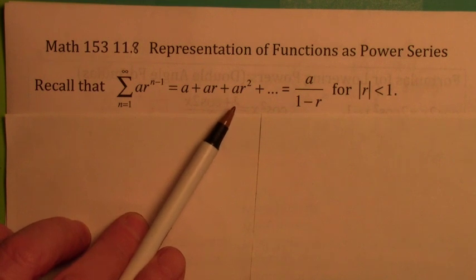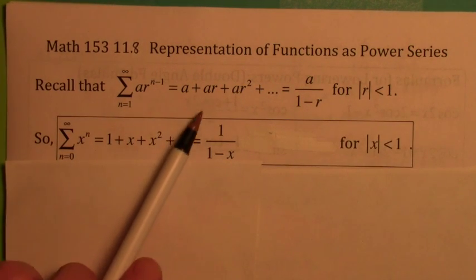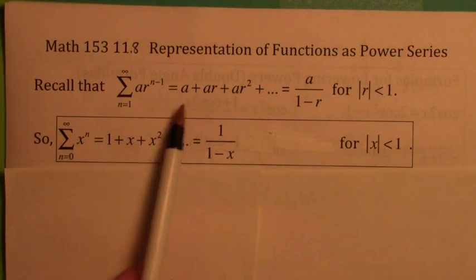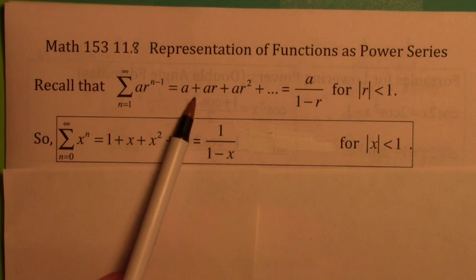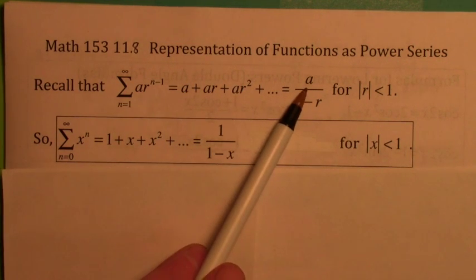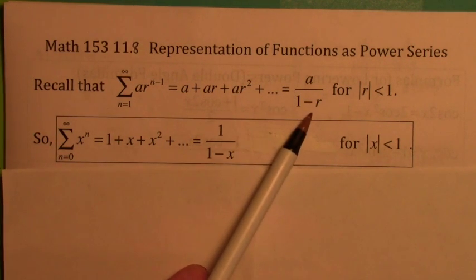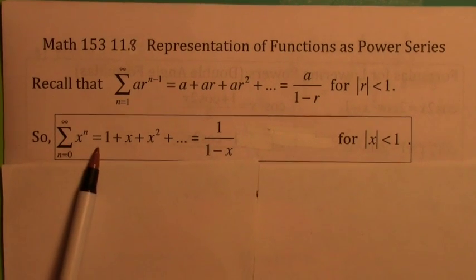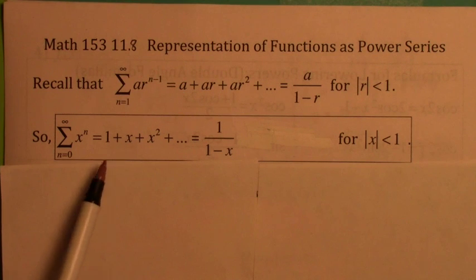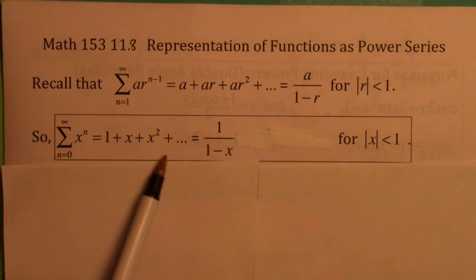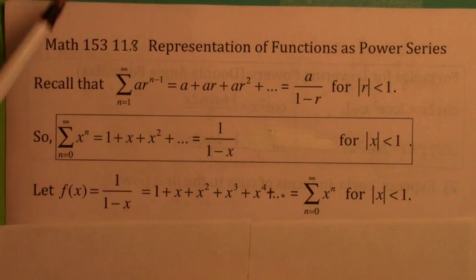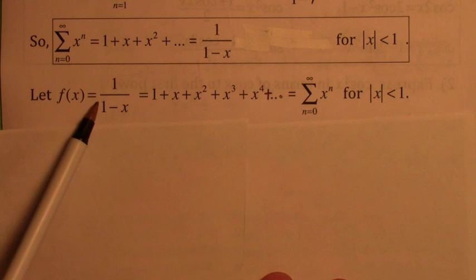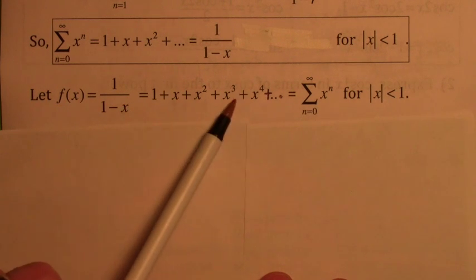We've used this a lot. If you replace r with x — if you take the same geometric series and wherever there's an r you just put an x — then it becomes this. The sum of the series would be 1 over 1 minus x. This is an example of probably one of the simplest power series. You could call it the geometric power series. The function 1 over 1 minus x can be represented by this infinite series.